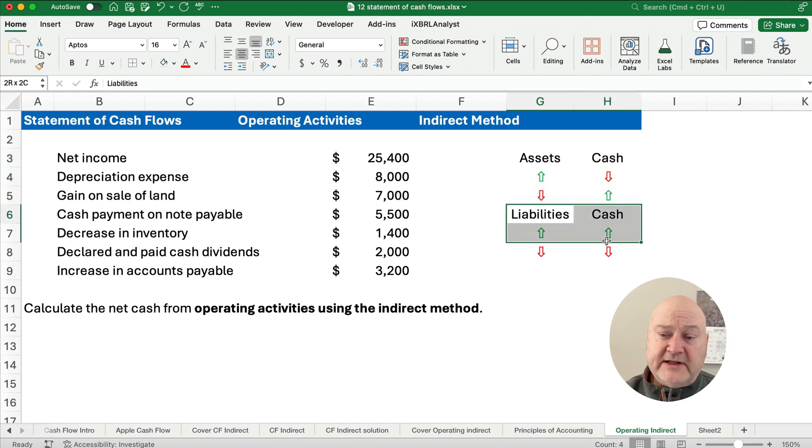If we have liabilities, we're borrowing money, so if liabilities go up, cash goes up. And if liabilities go down, cash goes down. That's our assumptions.